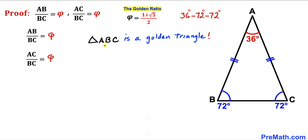Thus we conclude that this given triangle ABC is indeed a golden triangle. Thanks for watching and please don't forget to subscribe to my channel for more exciting videos.